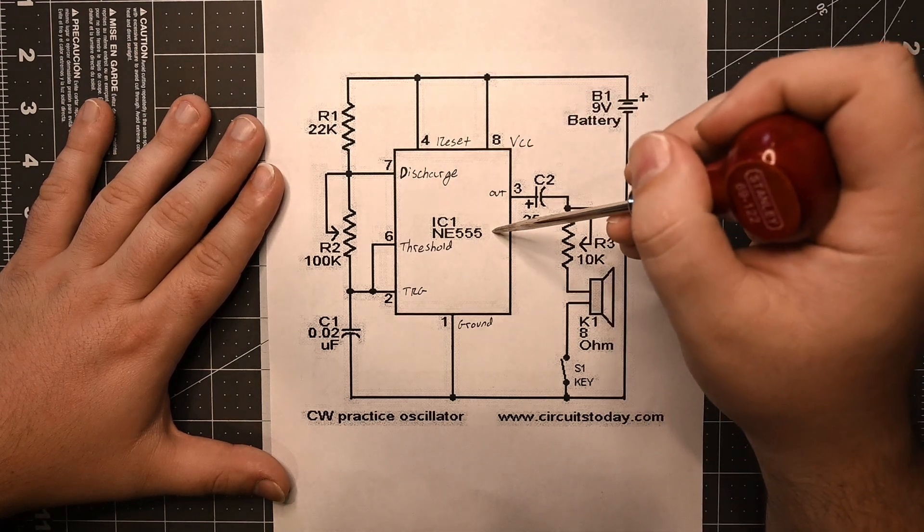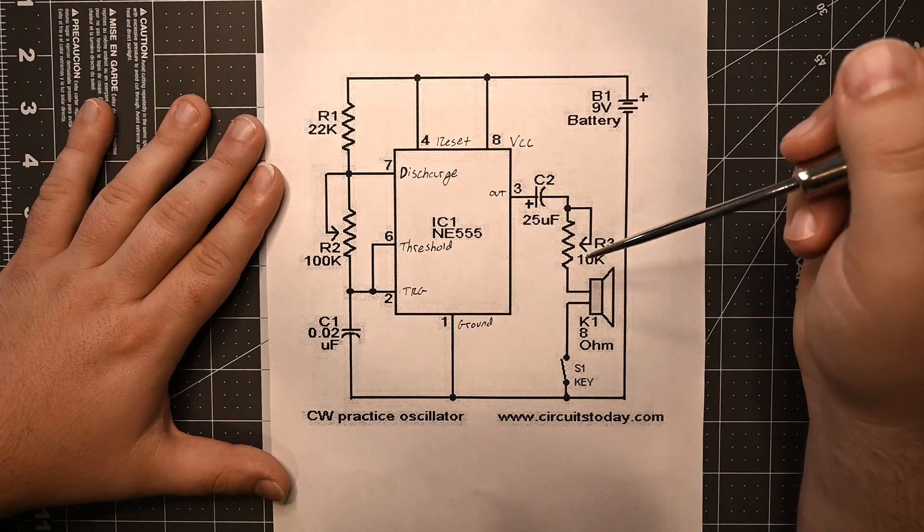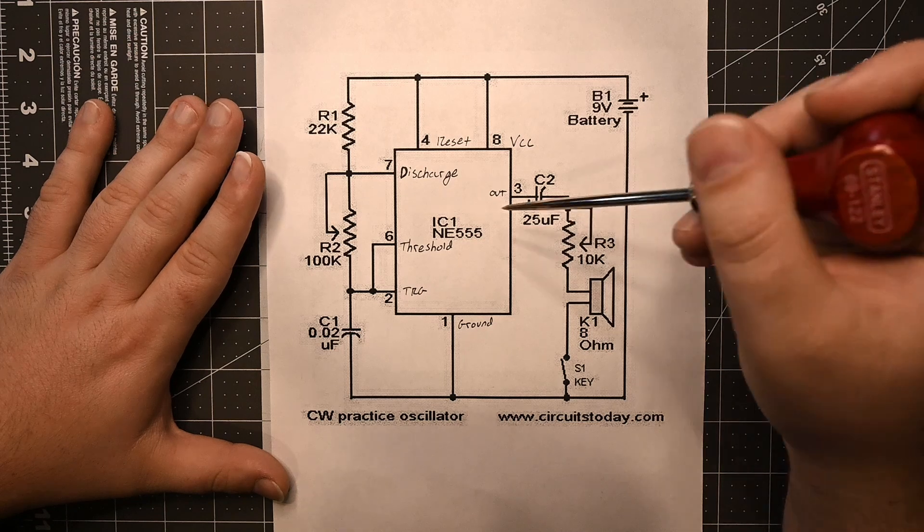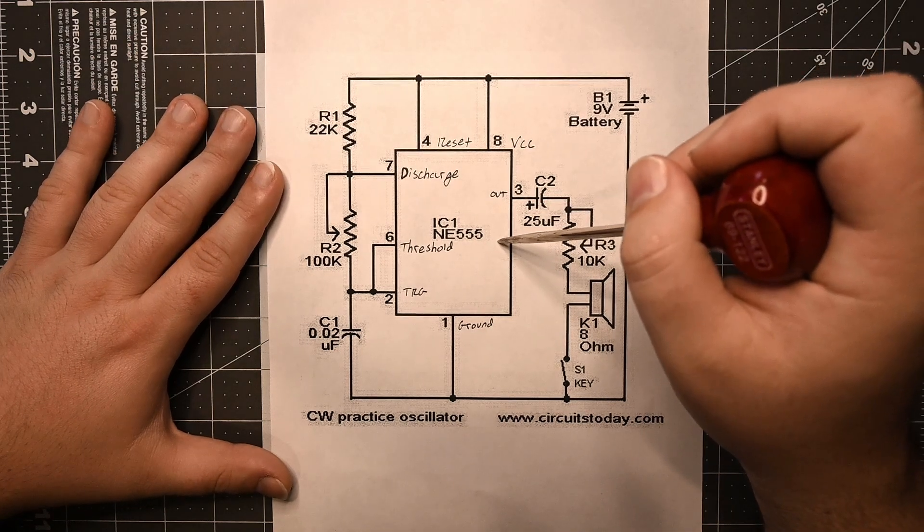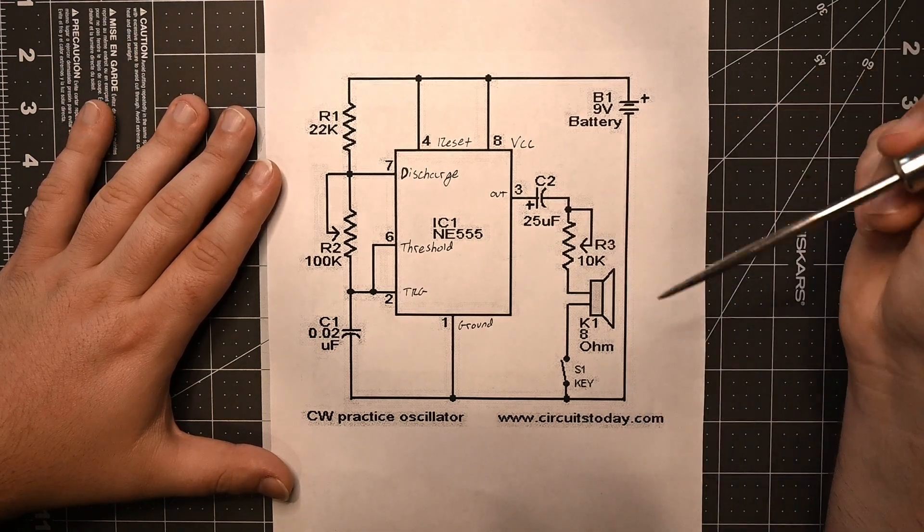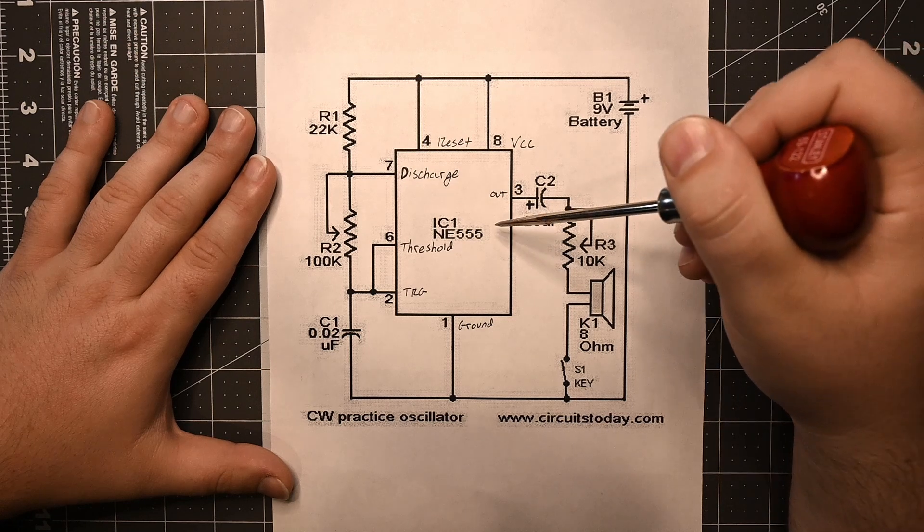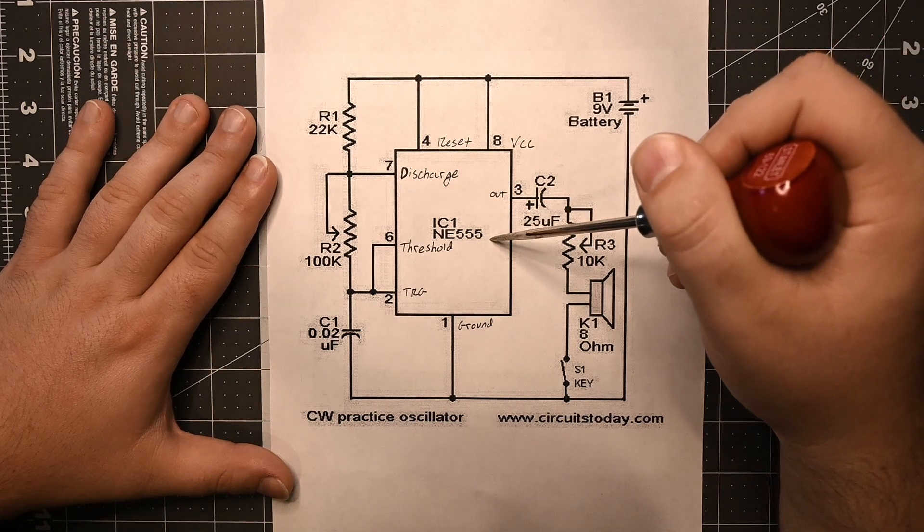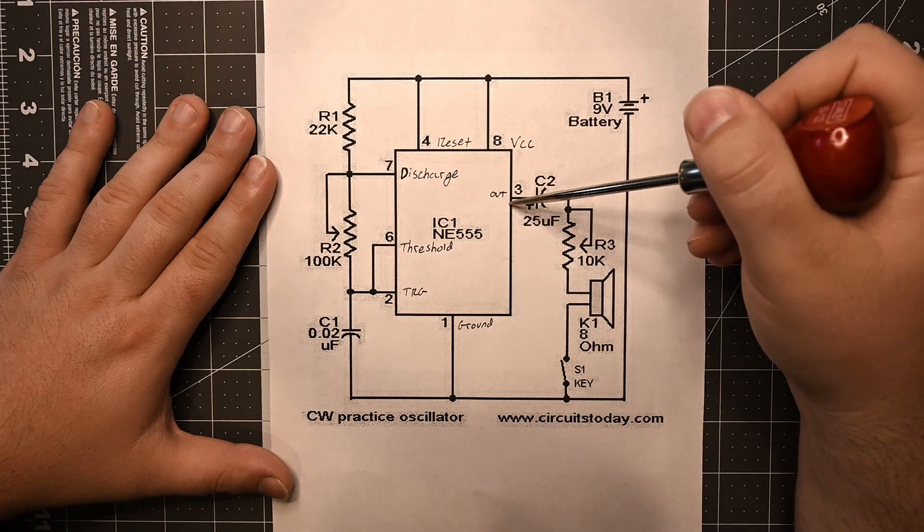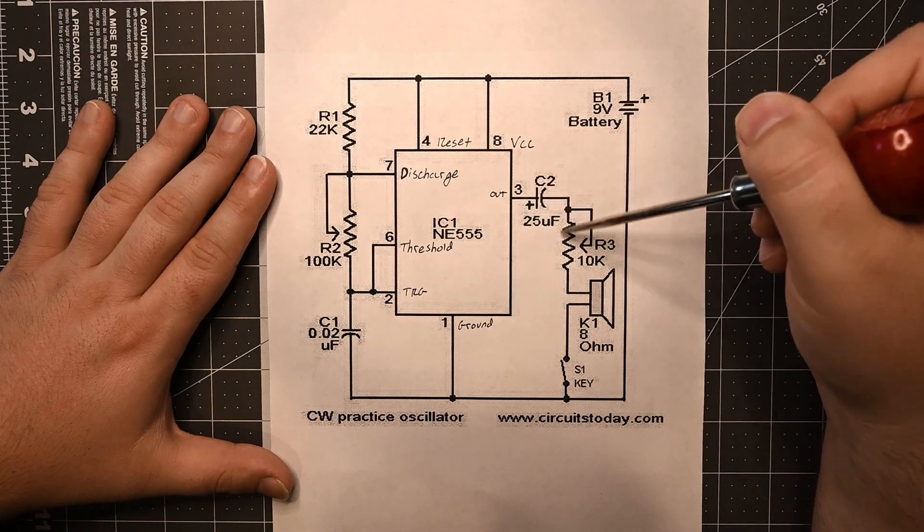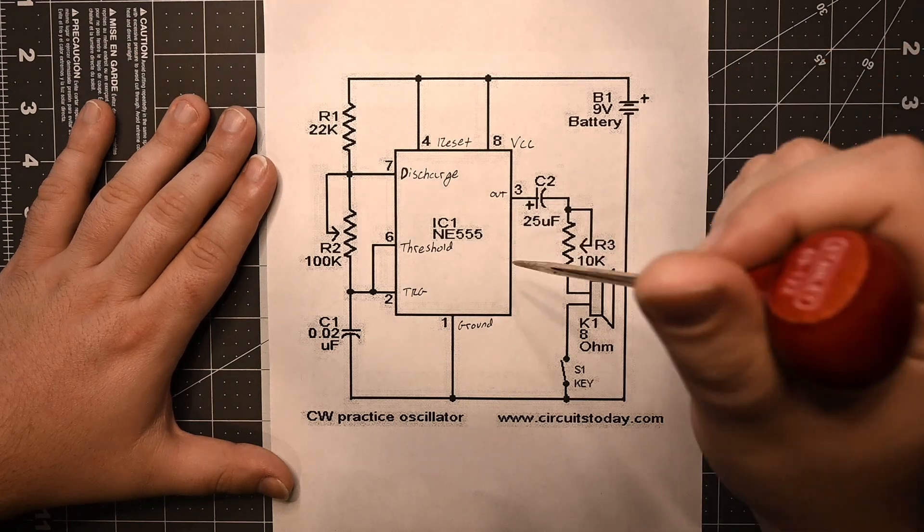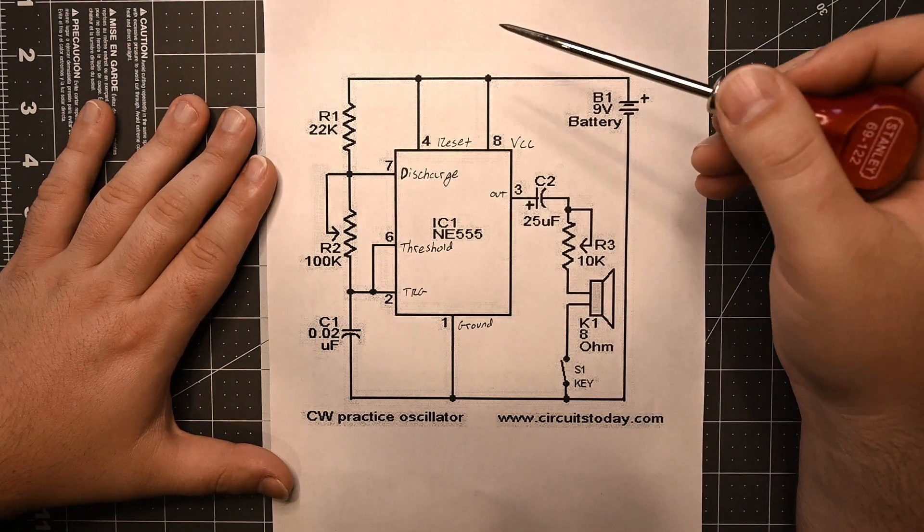I should mention, if you don't know how the 555 timer works, there will be links in the description to videos that can do a lot better job than I can at explaining how the 555 timer works itself. But for your information, this is going to be, the 555 timer we're going to be operating in astable mode to create a square wave to drive the speaker. So that's what we're doing here. But check the description, check the links out if you are interested in learning more about it.